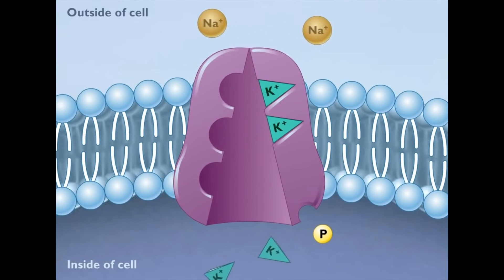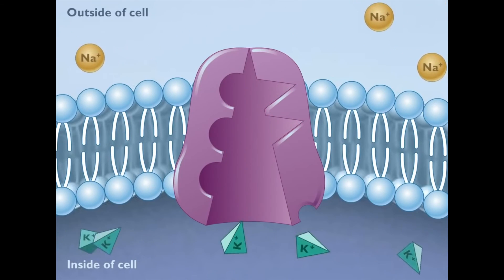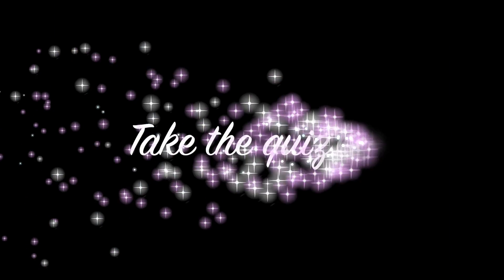The resting membrane potential is now reset and a new nerve impulse can be conducted if threshold is reached. Now that you know the process of a nerve impulse, you may test your knowledge by taking the short quiz on the next page.